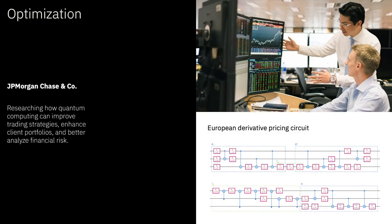Let me give another example for a different industry. This is in the case of our wonderful partner, JP Morgan Chase, where we work on the problem of optimization. And here we're looking at the potential to find better solutions more efficiently than what we can do classically to improve things like options pricing and fraud detection or portfolio optimization. And you're seeing here an example of circuits that have been developed for European derivative pricing.